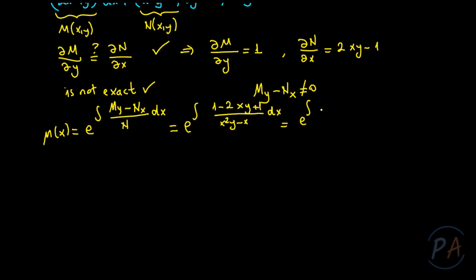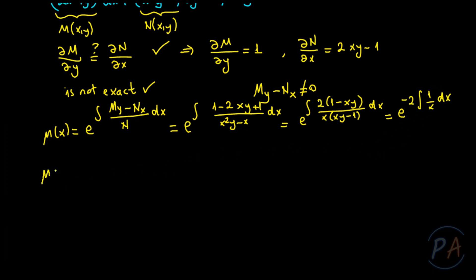This can be written as exp(∫ 2(1 - xy) / (x(xy - 1)) dx), and finally I can write exp(-2∫ 1/x dx). Since 1/x is the derivative of ln(x), the integrating factor μ(x) = exp(-2·ln(x)) = exp(ln(x^(-2))) = x^(-2). This is our integrating factor.